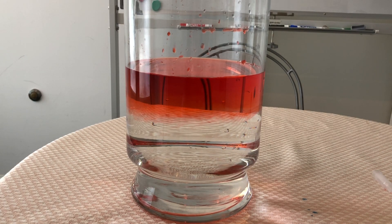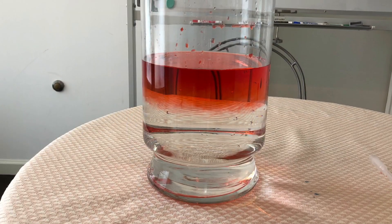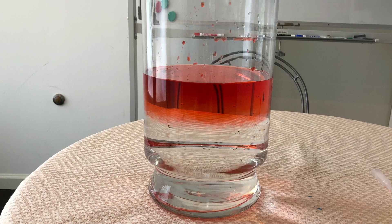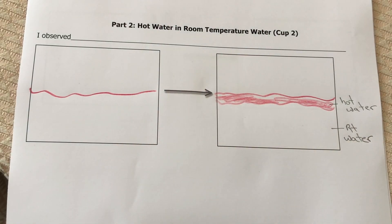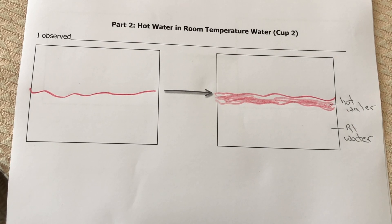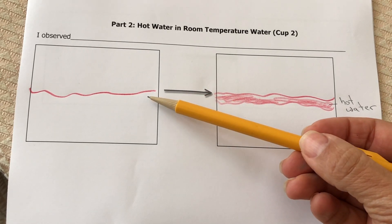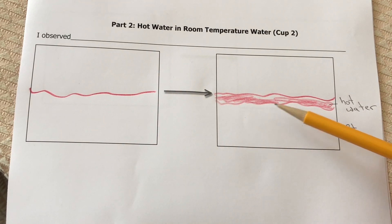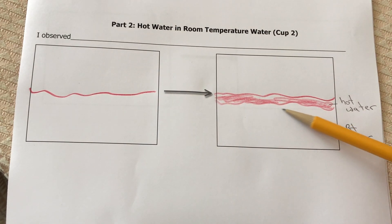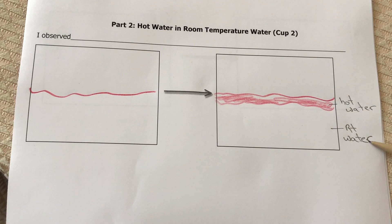Is hot water more dense or less dense than room temperature water? Here's the room temperature clear water, and all the hot red water is staying at the top. Go ahead and write your observation in words and draw what you see. We saw the hot water go to the top and after adding a lot more, it all stayed at the top — room temperature at the bottom, hot water on top.